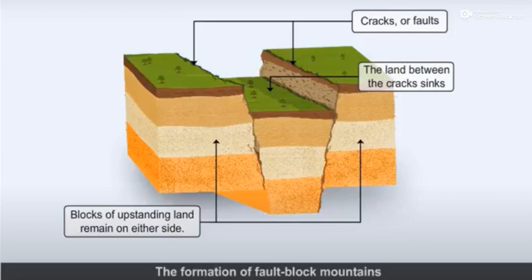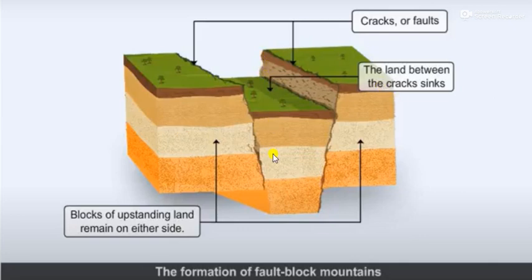This is exactly how block mountains are formed. Suppose this is a huge rock bed — just a piece of land. Cracks start to occur in two places. The land in between these two rock beds starts to sink. When it sinks, the land on either side automatically becomes elevated. These two upstanding blocks of rock are known as block mountains or fault block mountains.